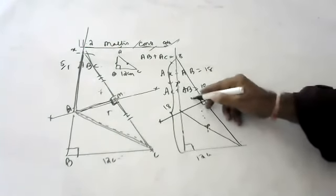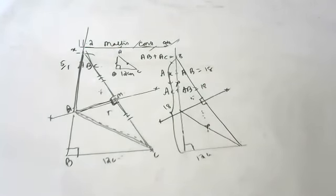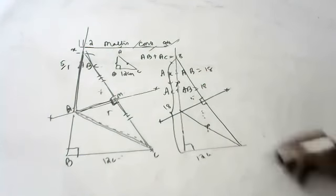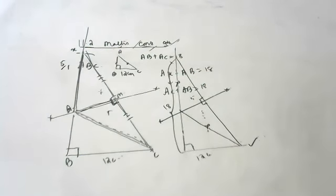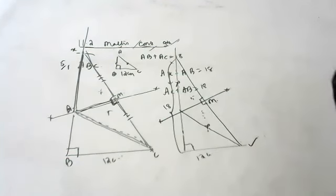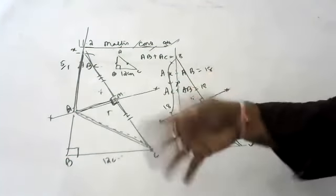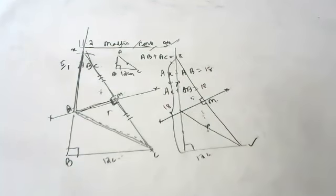Why are both triangles congruent? By SAS — it is common. Proofs of the construction are very, very important, children. Anyone having doubts in the proof — shall I explain the proofs again? Let me know. Proofs are very, very important.